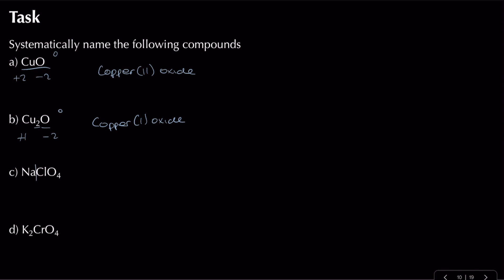For NaClO4: sodium has an oxidation state of plus one, so ClO4 must be minus one overall. Oxygen is minus two, four oxygens gives minus eight. To get from minus eight to minus one, I need plus seven — so the name is sodium chlorate(VII).